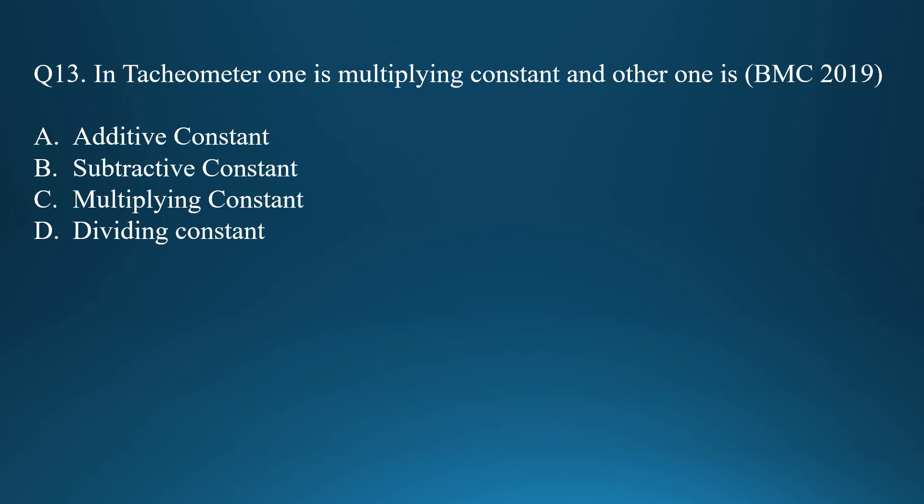Question twelve: in a tachymeter, one constant is the multiplying constant and the other is the additive constant. Option A is correct.